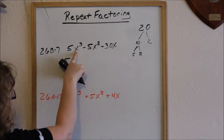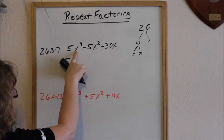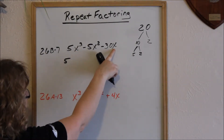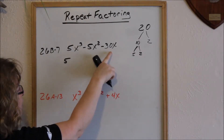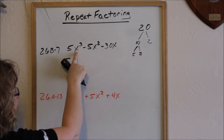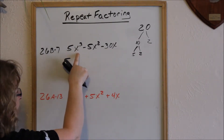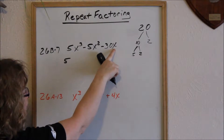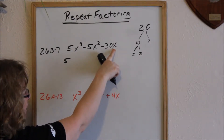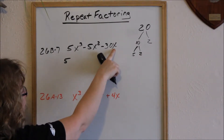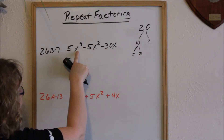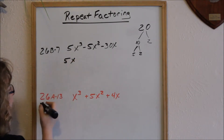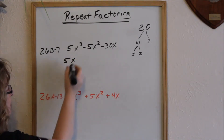Also looking at your x's — x cubed, x squared, x — the most I can factor out is an x. You look at the x with the lowest exponent. So I can factor an x out of every one of these, which means I can factor out a 5x.